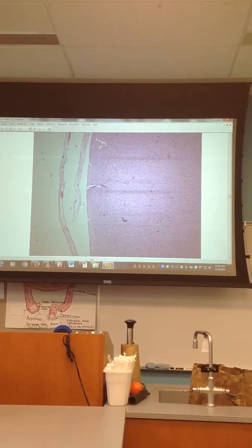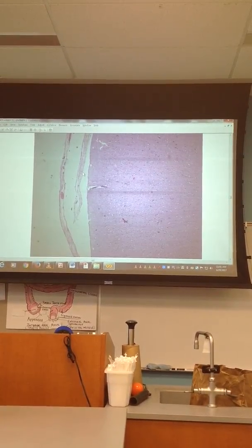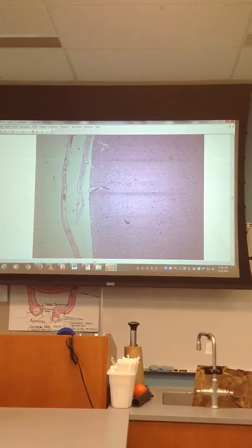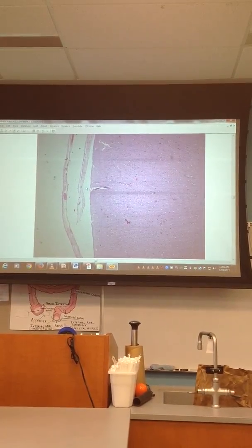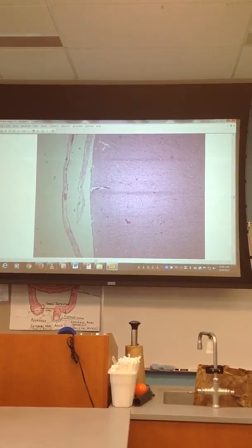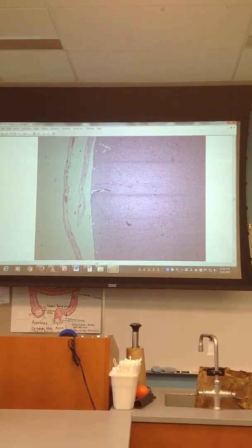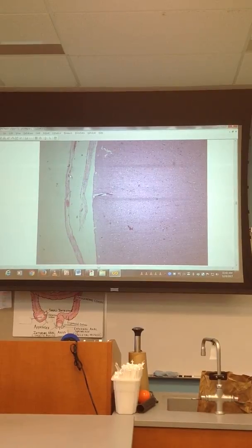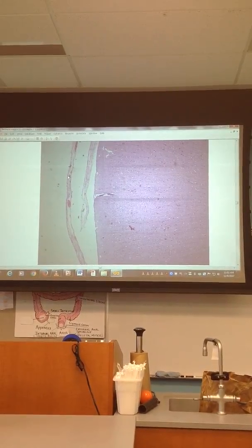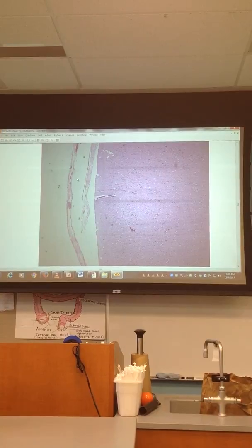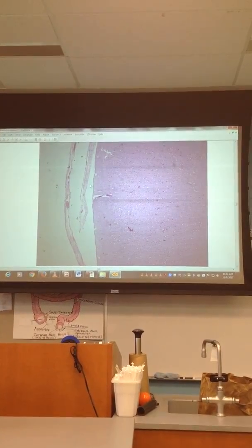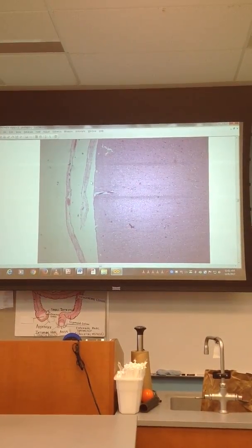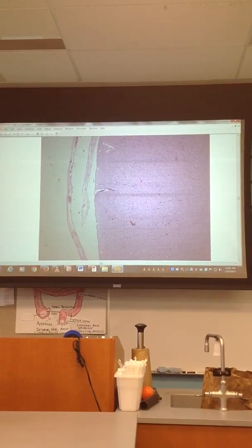Then, the arachnoid is just very thin. It's kind of a little dark line you may or may not see here. The takeaway is this is the subarachnoid space. So again, this is the dural sinus between the endosteal and the meningeal dura that houses venous blood. This is the subarachnoid space that houses the CSF.